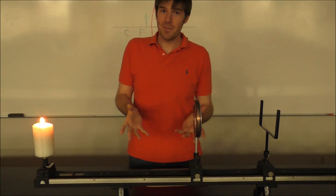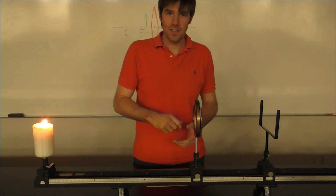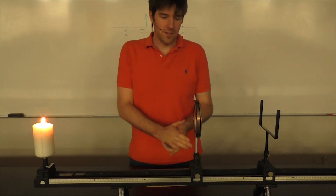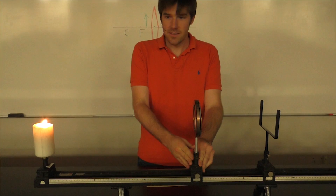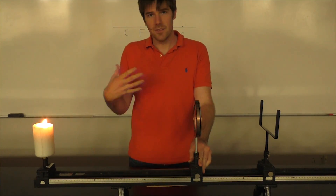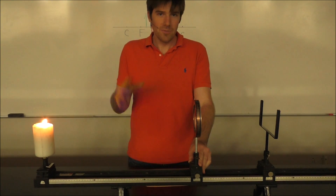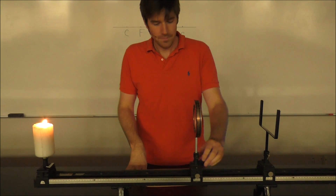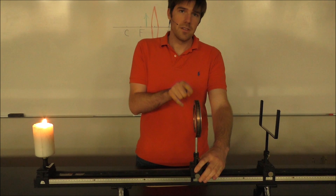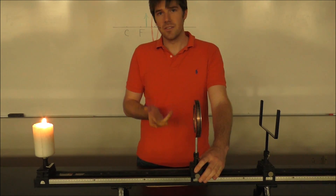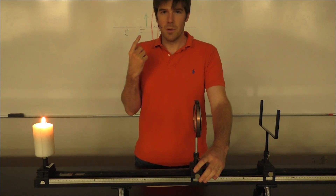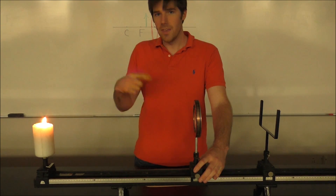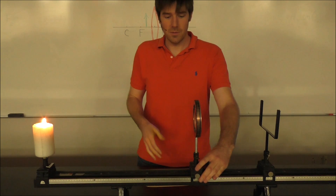Here's our setup — we have our thin converging lens and our object is going to be this candle. We're going to position this lens at various distances away from the object and try to find where the image results. We've dimmed the lights a little so that you can better see the resultant image. The focal length of this particular lens is 17 centimeters. In our first scenario we're going to determine where the image forms when the object is located within one focal length — so within 17 centimeters.